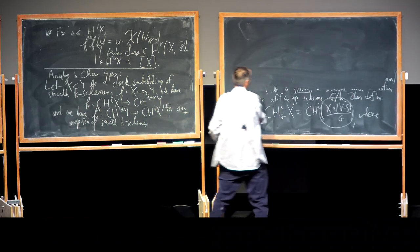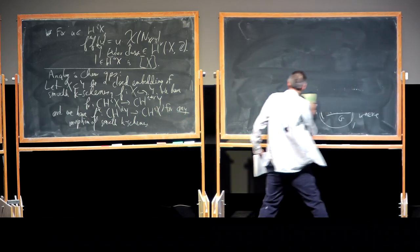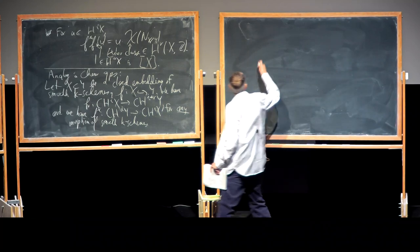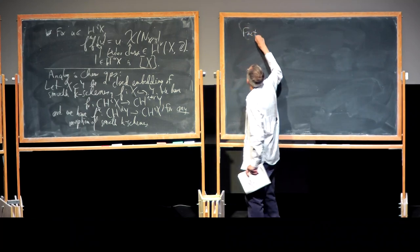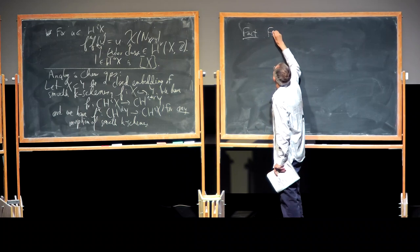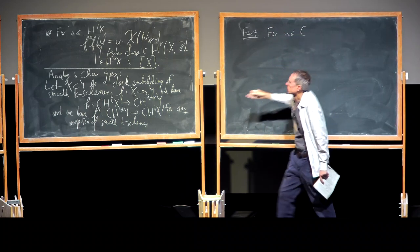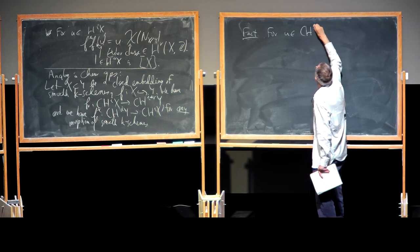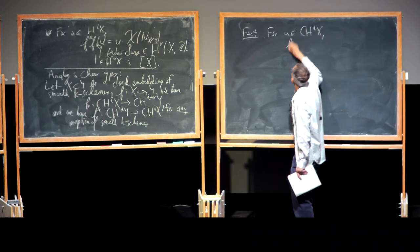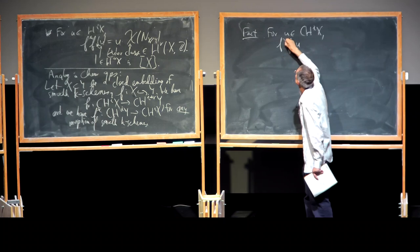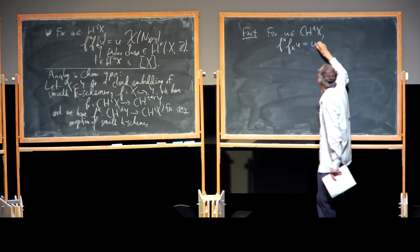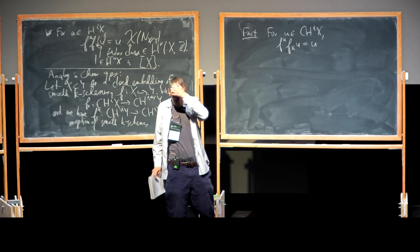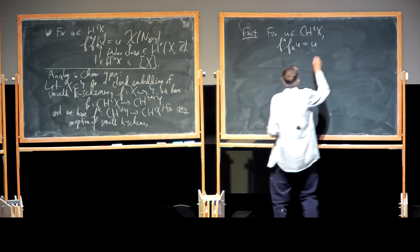Given those two maps, you have the corresponding formula for Chow groups. For any element of the Chow groups of X in the situation of a closed embedding of smooth k-schemes: if you push it forward to Y and then pull it back, what you get is U times the top Chern class of the normal bundle — which in this situation is the same as the top Chern class of the normal bundle of X in Y.